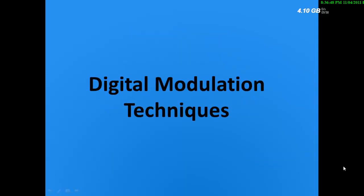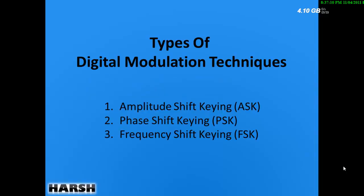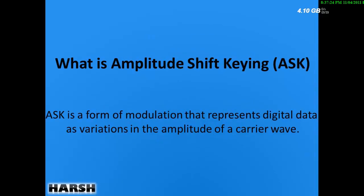What is the cause of digital modulation? We have seen earlier that there is analog modulation. Similarly, while transmitting digital data we have to modulate it so we can transmit it over a far distance. That's why there is the need for digital modulation techniques. The basic types include Amplitude Shift Keying, Phase Shift Keying, and Frequency Shift Keying.